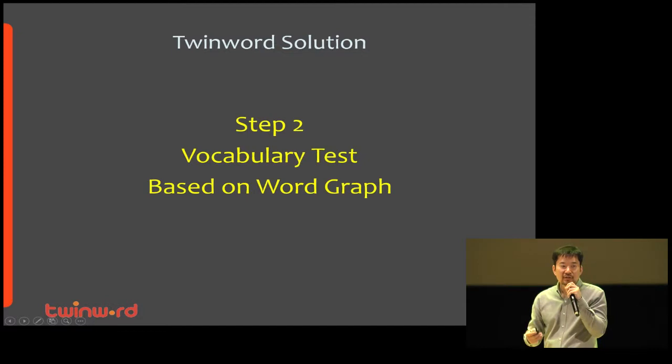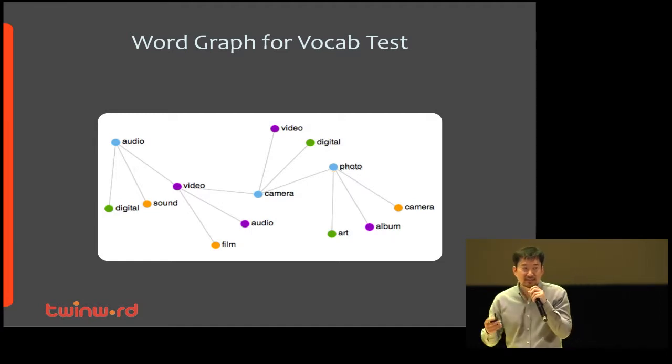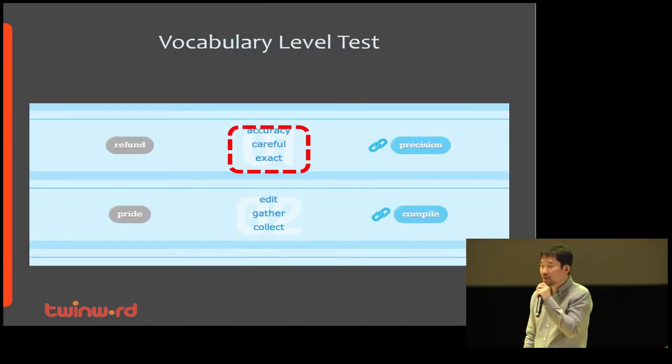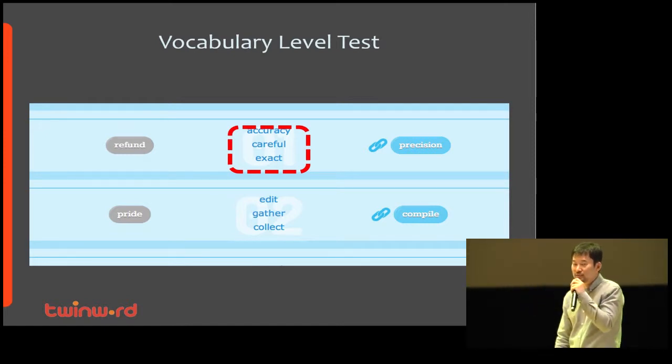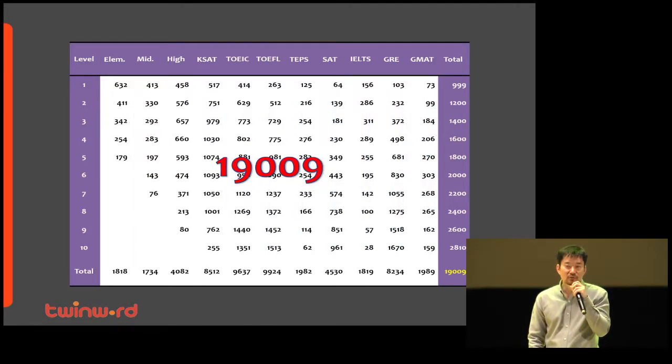Twinord generated similar word clusters from word graph and made word association tests like this. This test shows two options with three related words and asks to choose the most closely related words. Twinord provides many exams including TOEFL, SAT, and GRE. The size of vocabulary is almost 20,000, which is enough to test native speakers.